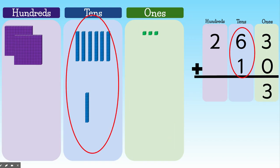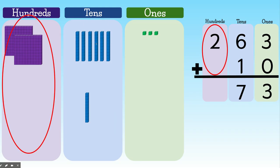Then we're going to move to our tens place. And we're going to add six tens plus one 10, which is seven tens. Then we're going to move to our hundreds place. And we're going to add two hundreds plus zero hundreds is two hundreds. So 263 plus 10 is 273.